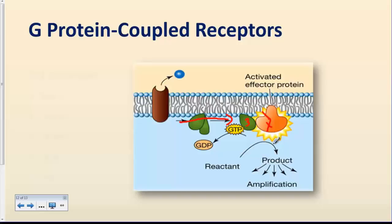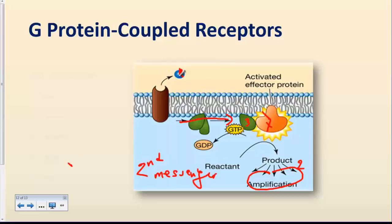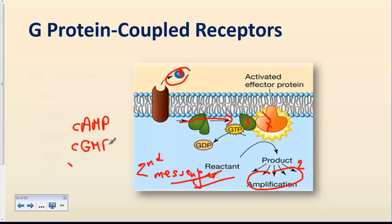The activated effector enzyme catalyzes a reaction that produces a certain product in large quantities — this represents an amplification of the original signal. From one signal molecule outside the cell, we can end up with a huge number of molecules inside the cell. This intracellular product is known as a second messenger — the first messenger being the original ligand on the outside. Famous second messengers include cyclic AMP, produced from ATP (cyclic adenosine monophosphate), cyclic GMP produced from GTP, and calcium ions, which can also act as second messengers.